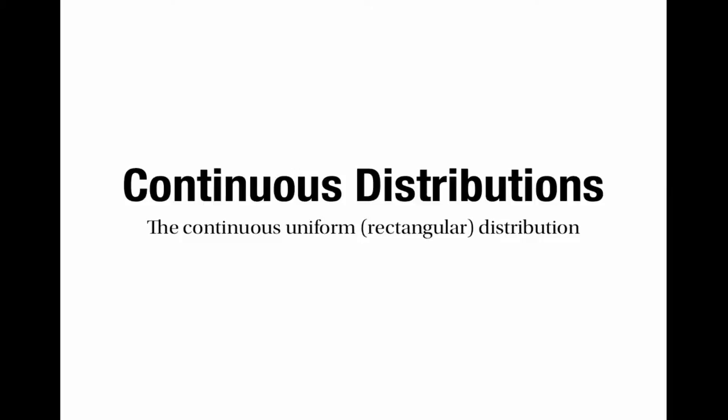This is a video about the continuous uniform distribution, also known as the rectangular distribution. You can see why it has these names from the graph of its probability density function. The probability density is uniform, i.e. constant, across a range of values, and the overall graph looks like a rectangle.